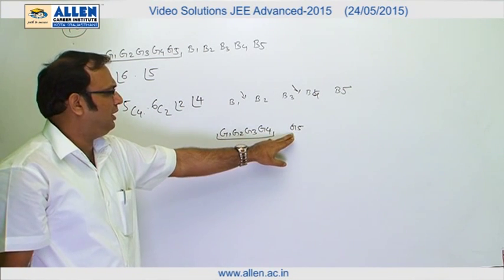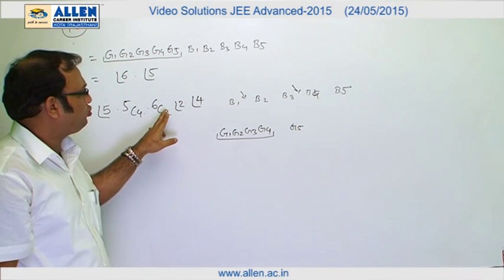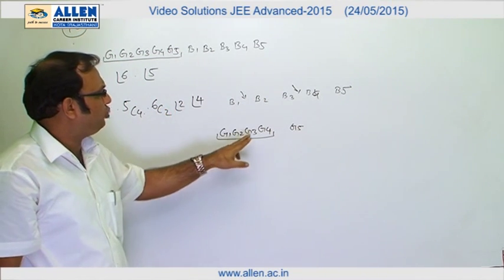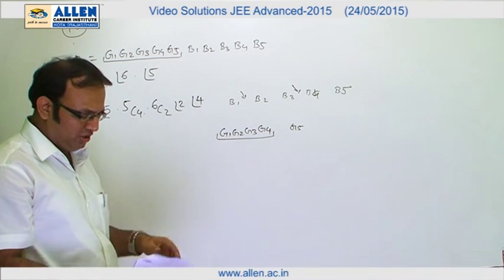There are 2 units. We have got 6 gaps. Out of 6 gaps, we choose 2 gaps. In those 2 gaps, we put these 2 objects in 2 factorial ways. Having done that, these 4 are arranged in 4 factorial ways.